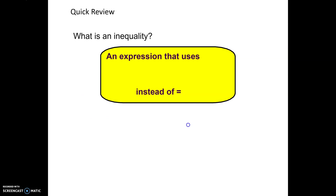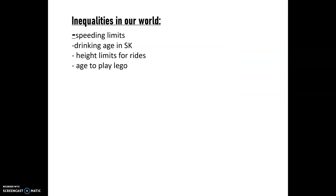Quick review: what is an inequality? It's an expression that uses one of four symbols instead of an equal sign. Inequalities in our world include speed limits — for example, if the limit is 100 km/h, our speed S must be less than or equal to 100. The drinking age in Saskatchewan means your age must be greater than or equal to 19. We also have height limits for rides and age ranges for toys like Lego.